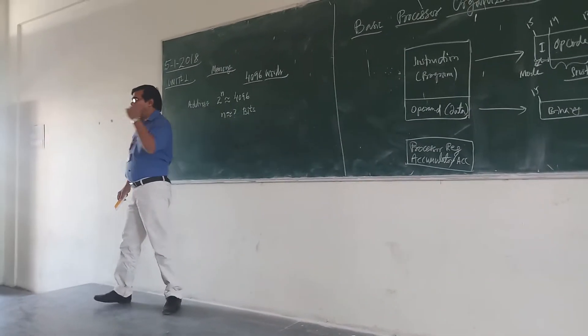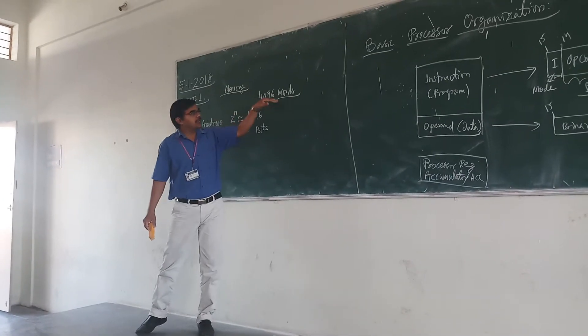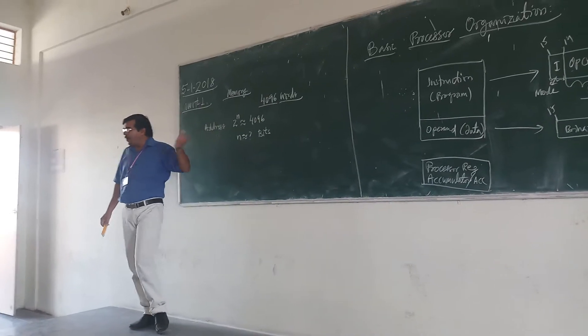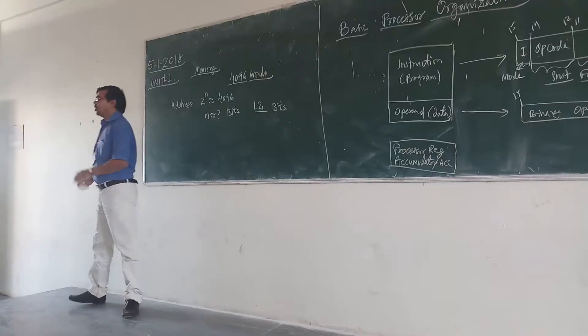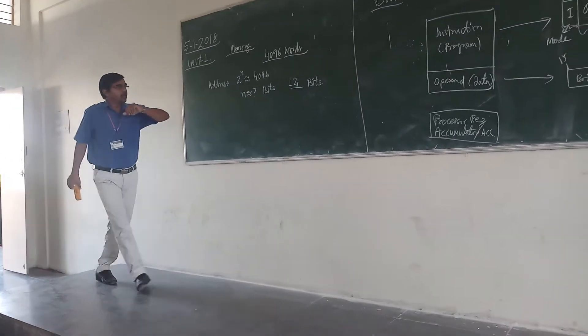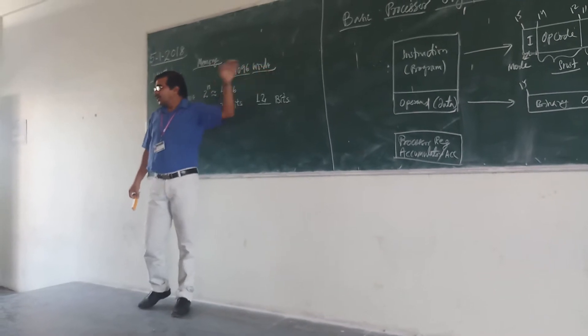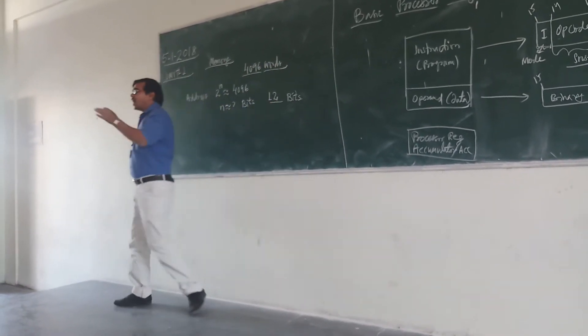So suppose if we are having 4096 words, then how many bits are required? So if we are having 4096 words then we need 12 bits for addressing.